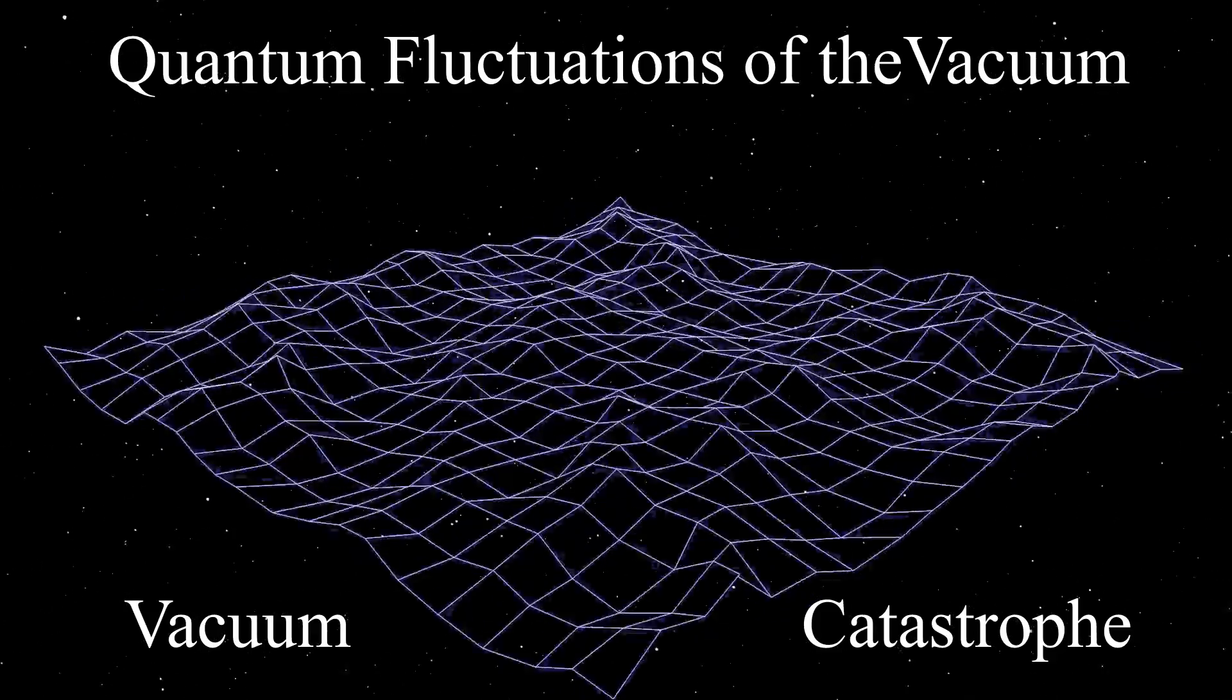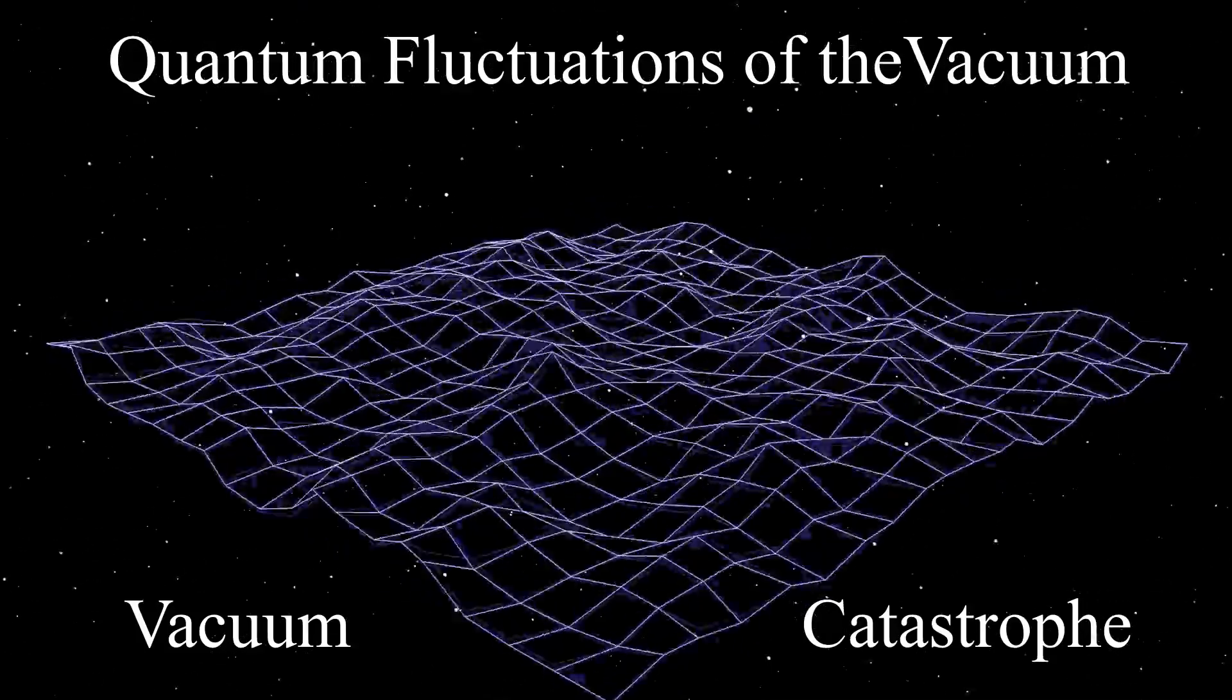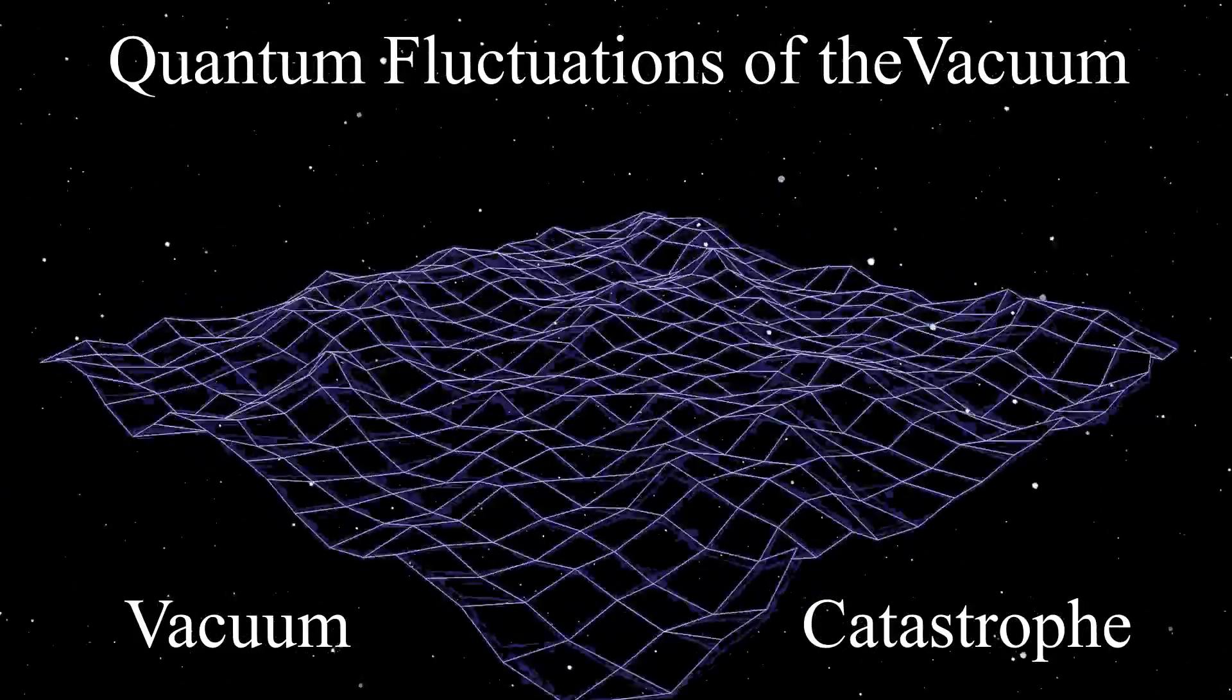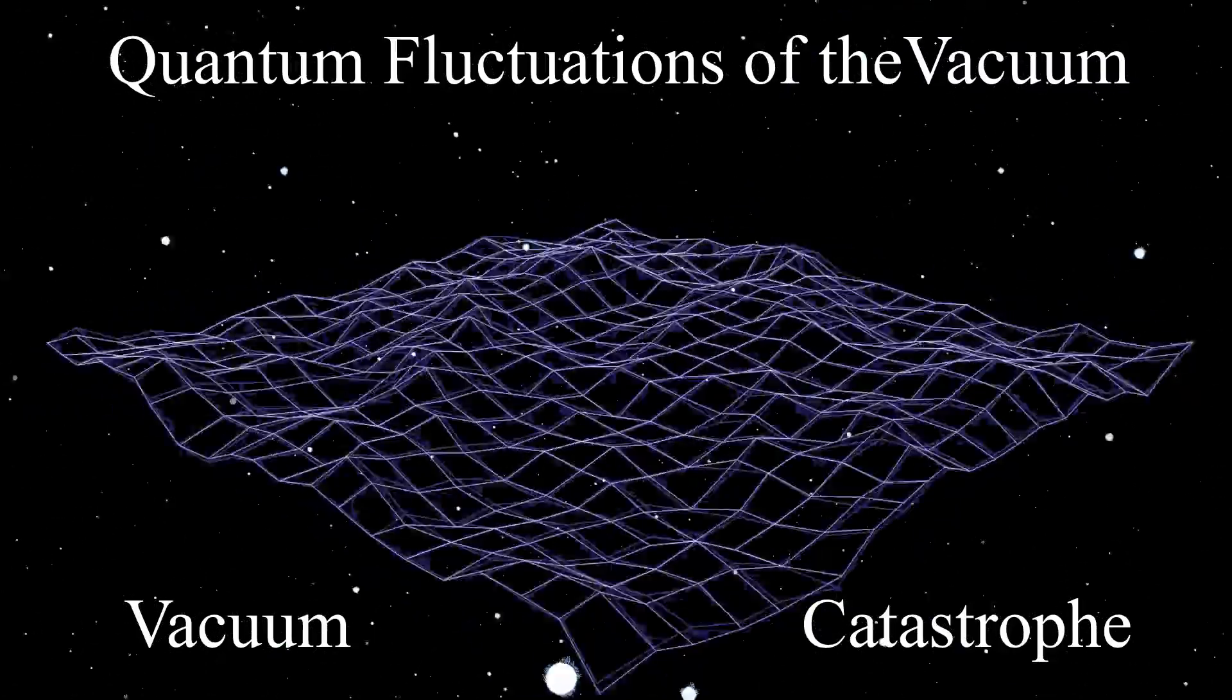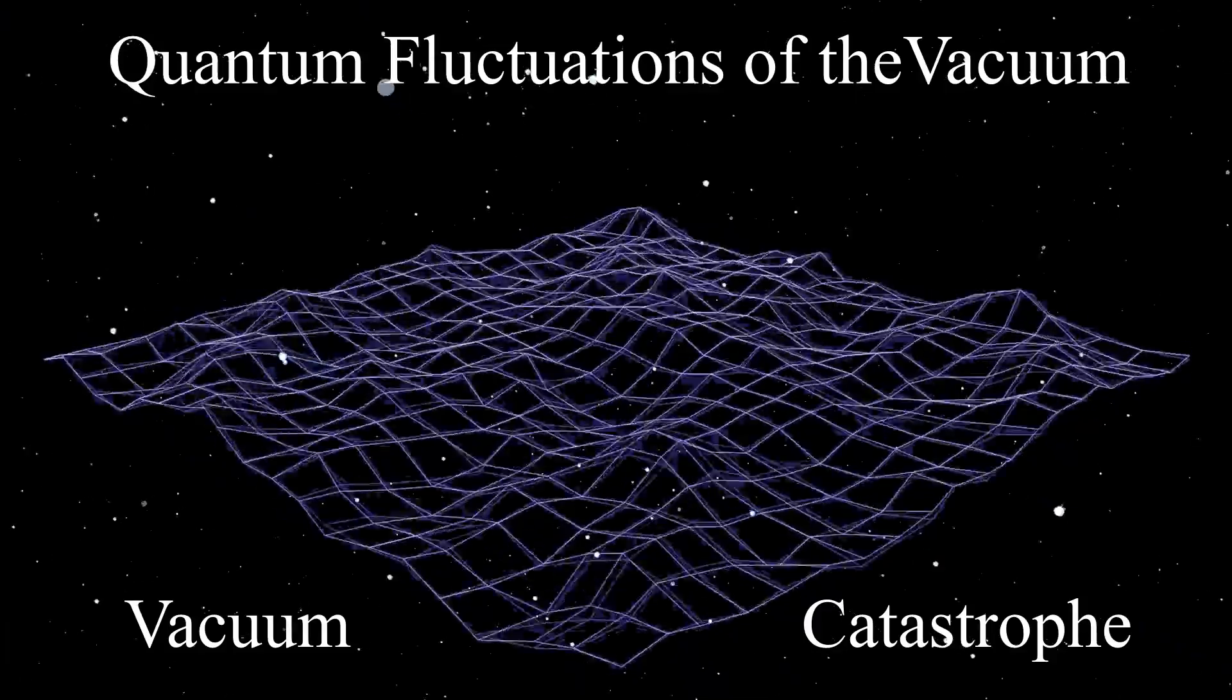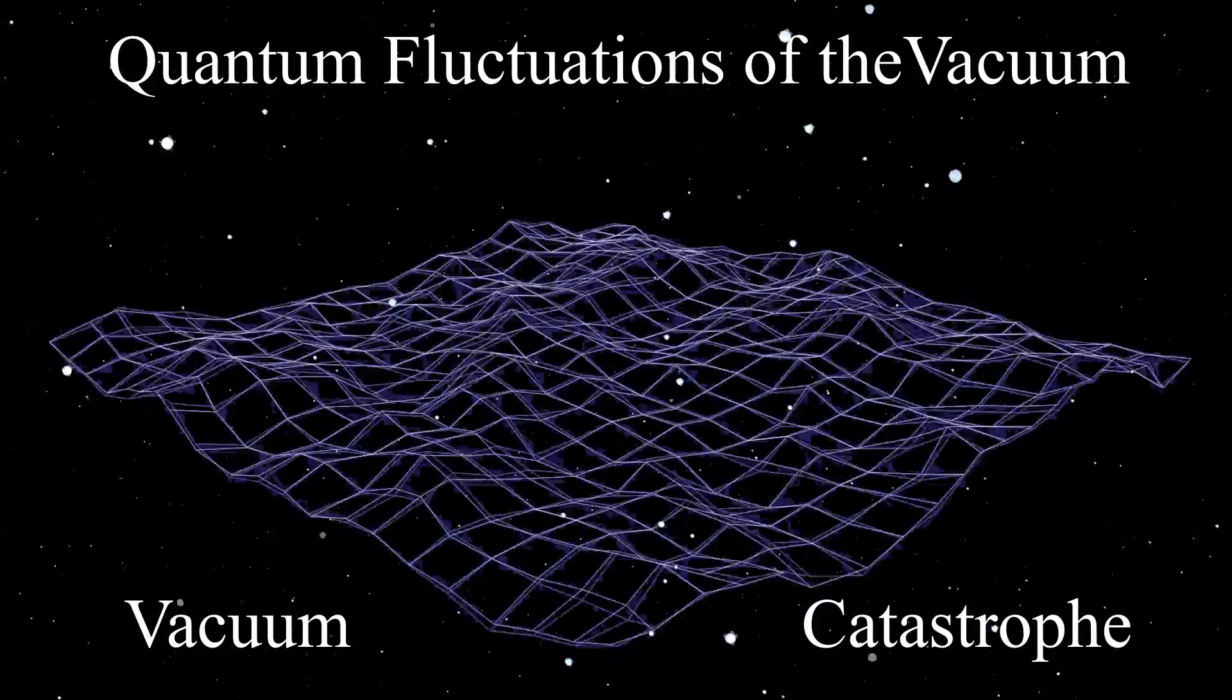Unfortunately, quantum field theory predicts a dark energy density associated with quantum fluctuations of the vacuum that is too large by 120 orders of magnitude. This is called the vacuum catastrophe.